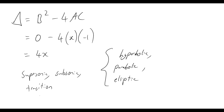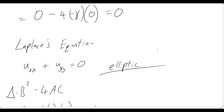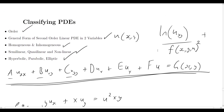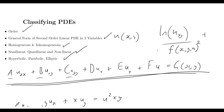Today we've gone through classifying partial differential equations: the order of partial differentials, the general form of PDEs, homogeneous and inhomogeneous, semi-linear, quasi-linear, non-linear, and linear, and hyperbolic, parabolic, and elliptic PDEs. If you enjoyed today's video please leave a like, and if you'd like to follow along for the rest of the series hit subscribe. I hope you have a great day and stay curious.